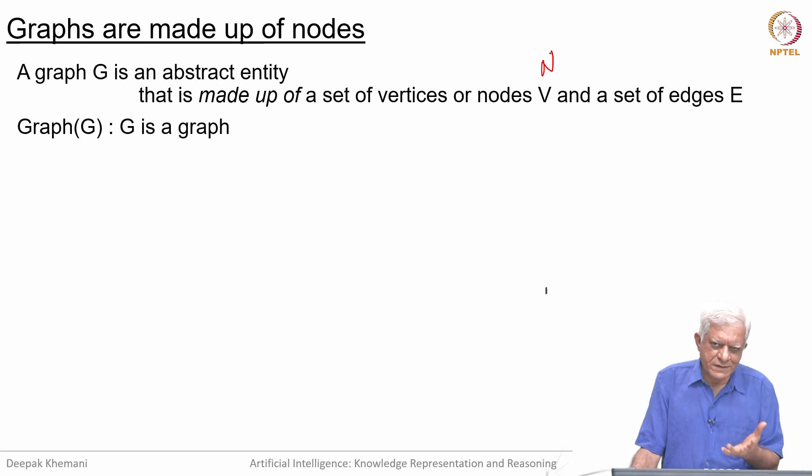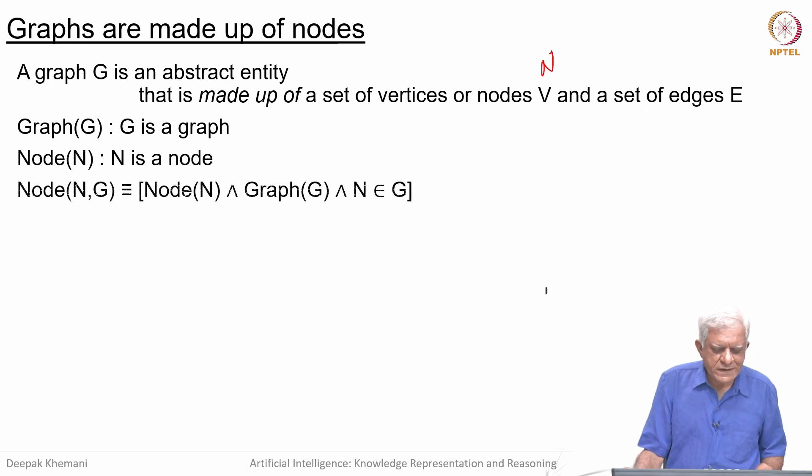We can say that G is a graph. G would be an abstract entity, a collection of all those nodes and all the connections between those nodes. A node is defined in a domain. We can say N is a node in the graph G by saying N is a node, G is a graph, and N belongs to G.